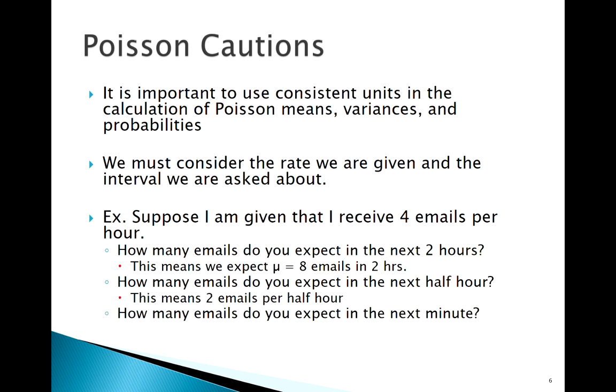How many would I expect in the next minute? Four per hour means four-sixtieths, or one-fifteenth, of an email per minute. Now that doesn't make a whole lot of sense because obviously we couldn't get one-fifteenth of an email, but we still have to treat it like that. We still have to adjust our lambda, adjust our expected value to the interval that we're asked about.